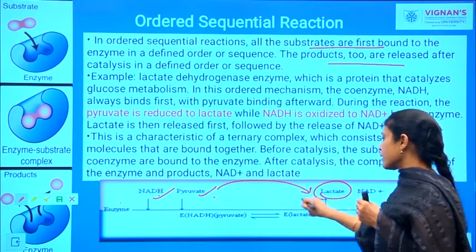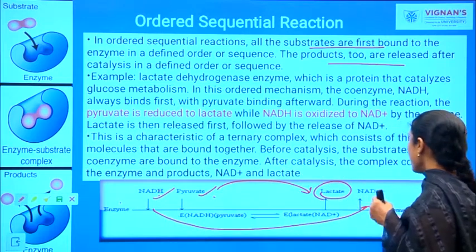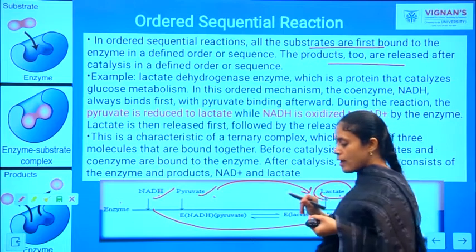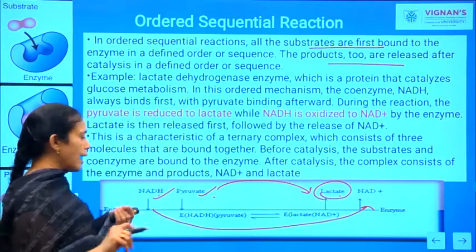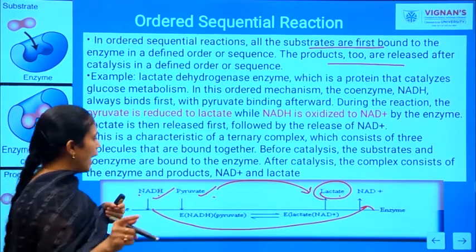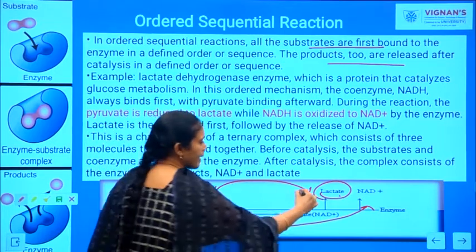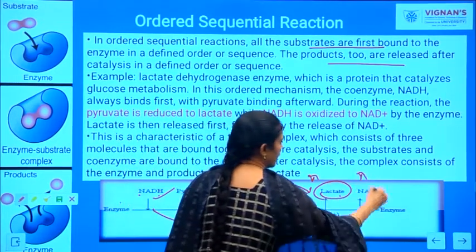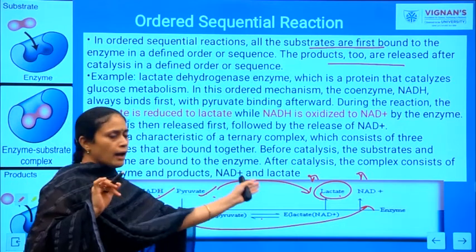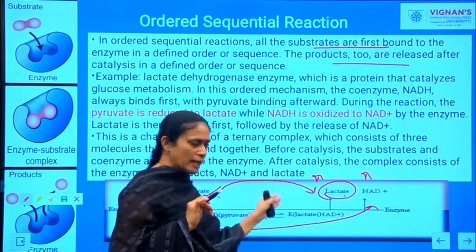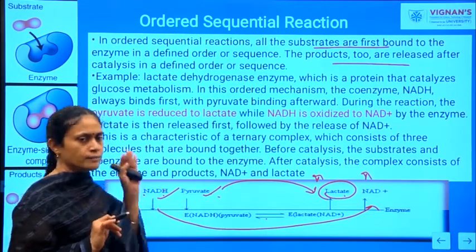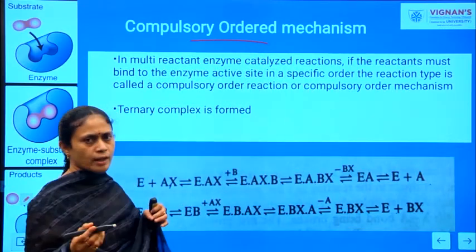Pyruvate is reduced to form lactate, and NADH is oxidized to form NAD+. So we get two products: lactate and NAD+. During the initial point of the reaction, NADH binds to the enzyme first, followed by pyruvate. After the reaction takes place, lactate is released first, followed by the release of NAD+, and the original enzyme is retained. This is the compulsory ordered mechanism.